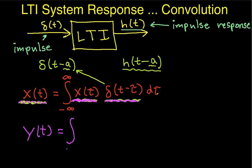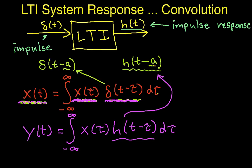So my output can be written as the integral from minus infinity to infinity, x of tau delta. Whoops, we don't want delta. That's the wrong thing here. We want h of t minus tau, d tau. So what I've done in this expression is replace the delta function going into the system, this guy, with h of t minus tau coming out of the system. And again, the x of tau's stay the same because for each delta function, this x of tau is just like a constant out in front.